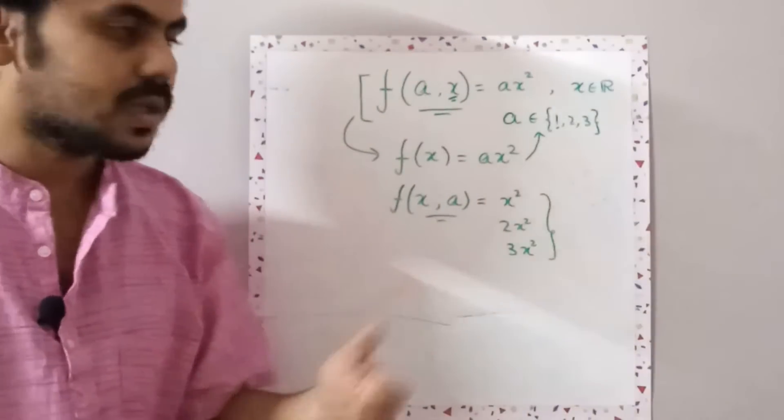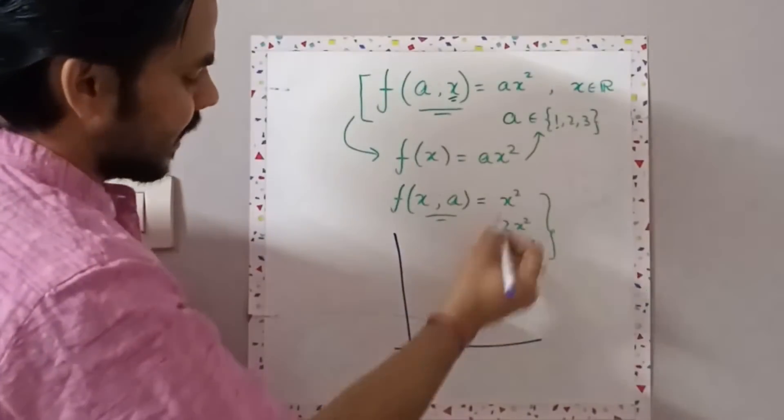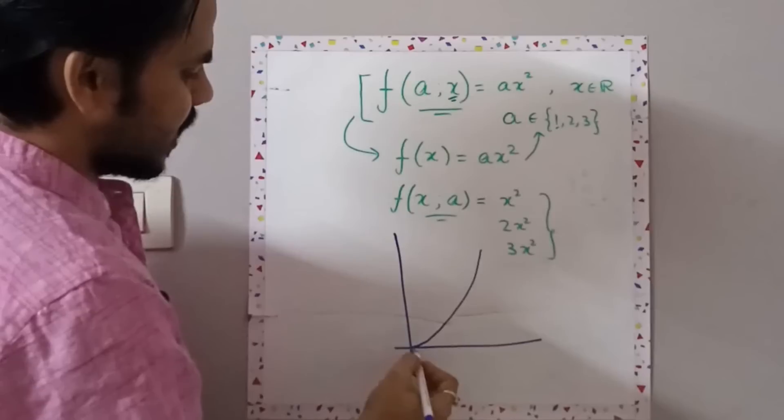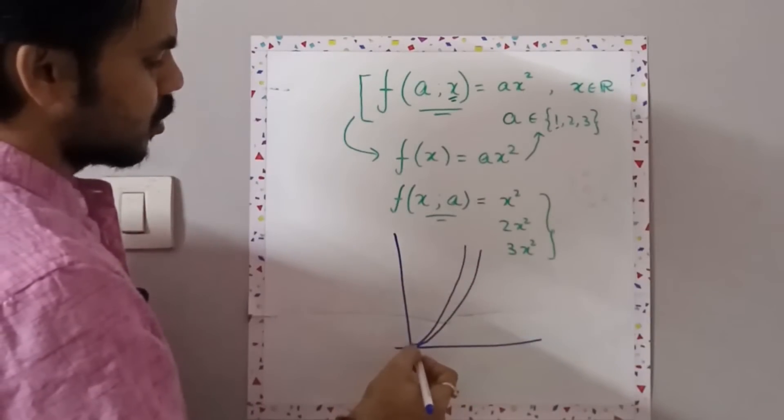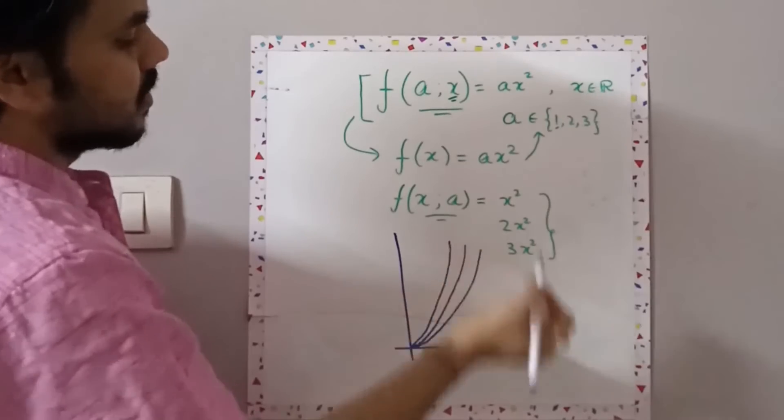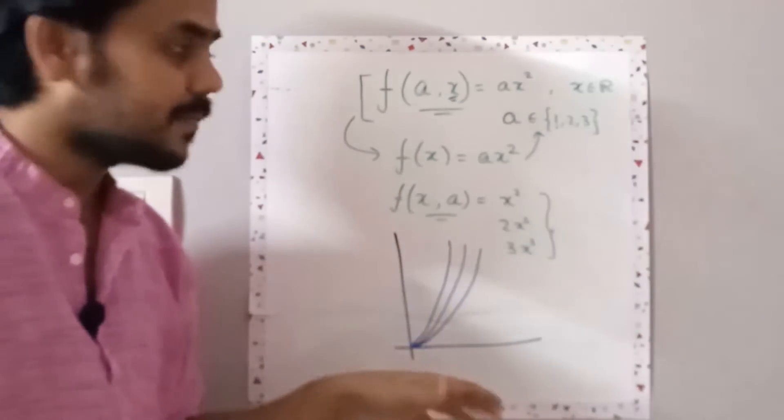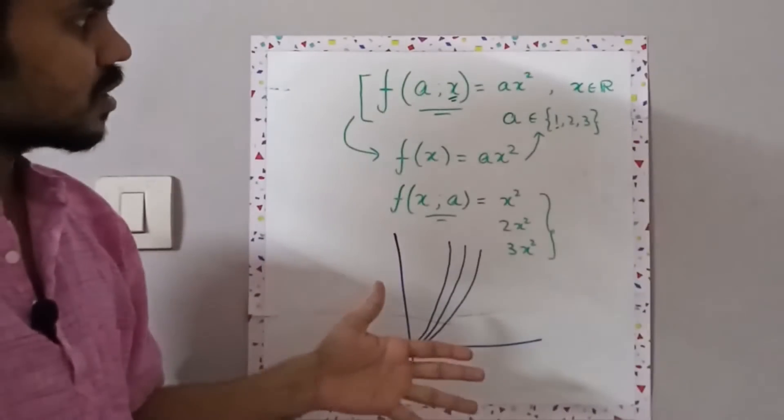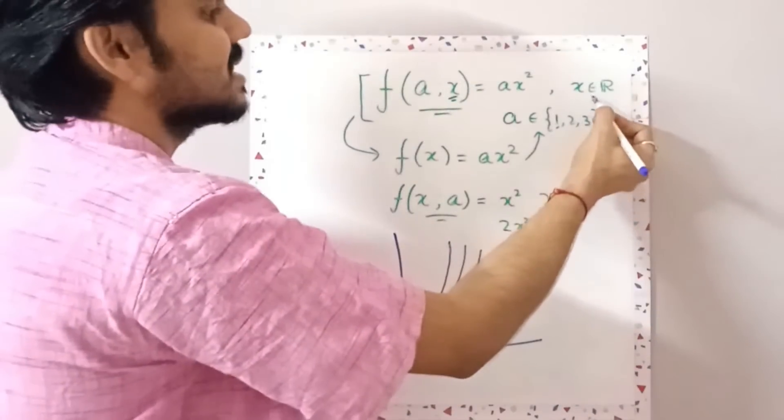So you can think of it in this way: the parameter makes a lot of functions into one, or kind of makes a family of functions. Now if I have to plot this, it will look something like this: x² is something like this, 2x² will be steeper than that, 3x² will be also steeper than that. So this is the family of functions.